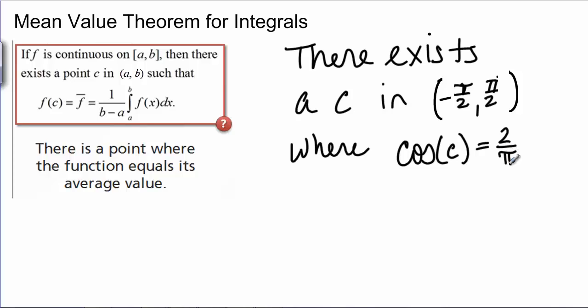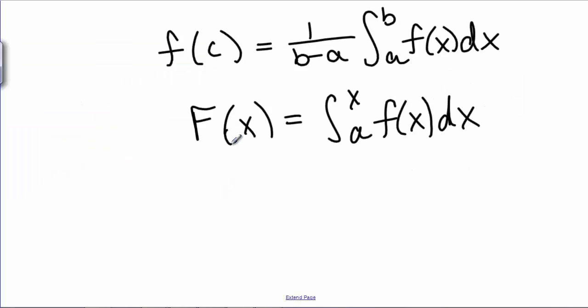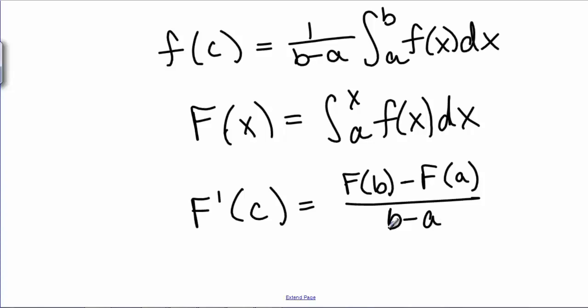So even if we don't know what that is, there is a c. Then we know from the original mean value theorem that there exists a c where capital F prime of c is equal to capital F of b minus capital F of a divided by b minus a, but we know that the derivative of capital F is the same as little f. So this is actually just the exact same thing as little f of c.